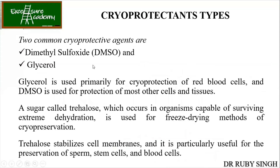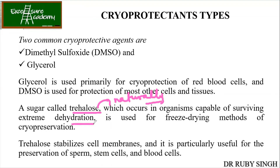There are two major cryoprotective agents: dimethyl sulfoxide (DMSO) and glycerol. Glycerol is generally used for RBCs, and DMSO is mainly used for other cell lines and tissues. I have always used DMSO at 10% — so if making a 3 ml freezing vial, 10% of that is 300 microliters. There are also other cryoprotectants like sugars called trehalose. Trehalose is present naturally inside organisms and helps in extreme dehydration — it stabilizes cell membranes and is particularly useful for the preservation of sperms, stem cells, and blood cells.